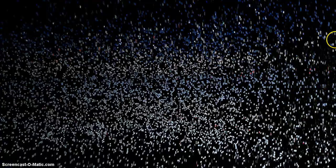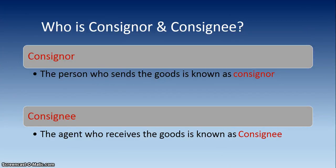Now, who is Consignor and Consignee? The person who sends the goods is known as Consignor — جو person goods بھیجتا ہے third party کو وہ Consignor ہوتا ہے۔ The agent who receives the goods for selling in the market is known as Consignee. For example, if Mr. X sends goods to Mr. Y, then Mr. X is the Consignor and Mr. Y is the Consignee. Mr. Y will sell Mr. X's goods in the market and in return will get commission from Mr. X.